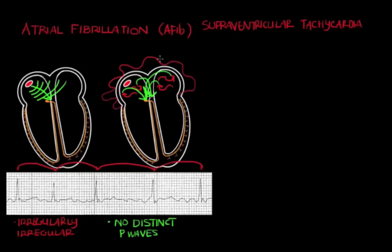That's because the atria is spasming, so you're not going to get that nice, unified, concentric contraction of the atria. So you have these coarse squiggly lines instead, representing the atrial spasm.